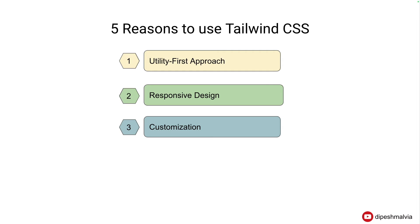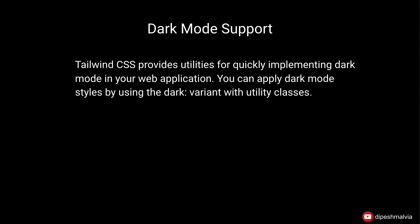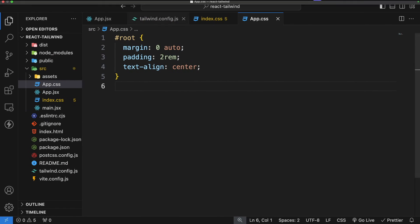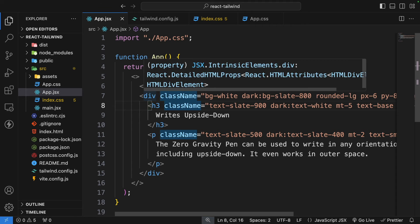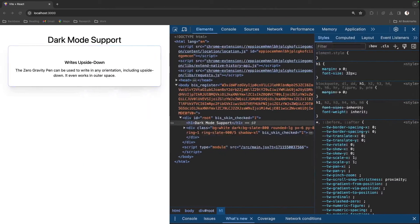The next reason for using Tailwind CSS is dark mode support. I really love how easily you can build dark mode support, as Tailwind provides utilities for quickly implementing dark mode. You can apply dark mode styles using the dark variant with utility classes. Here we have some classes that are applicable in light mode and others that get activated in dark mode.